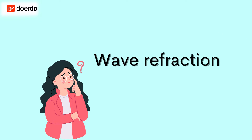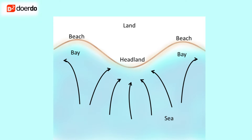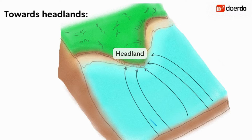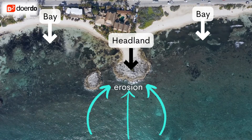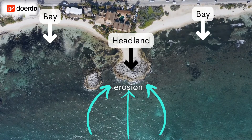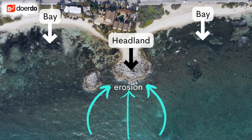Why is this wave refraction important? Look at this image. These arrows indicate how energy is directed. The refraction causes the energy of the waves to be concentrated or converged at the headland where the water is shallower. This is the area where we see higher waves and also greater erosion.